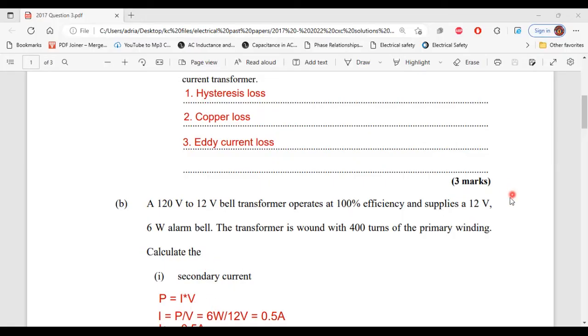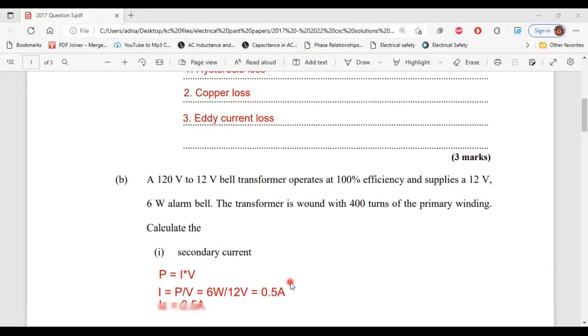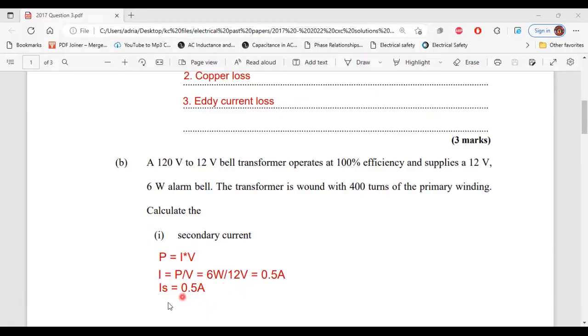We'll have to use those two values to calculate the current. P equals I times V, and we need to rearrange this formula to make I the subject. Therefore, I equals P divided by V. That will give us 6 watts divided by 12 volts, which equals 0.5 amps. Seeing that we're calculating the secondary current, we'll call that IS. Therefore, IS equals 0.5 amps. That's it for part one of B.